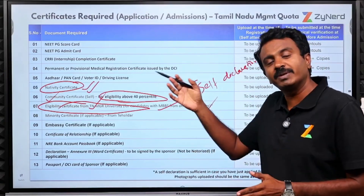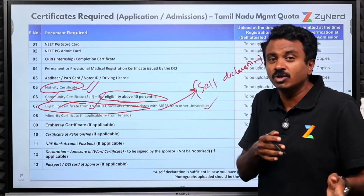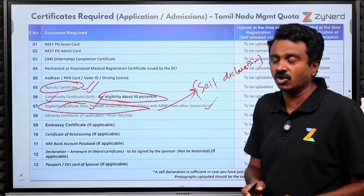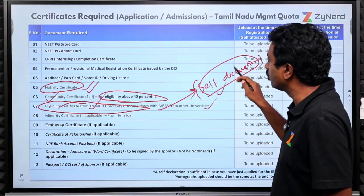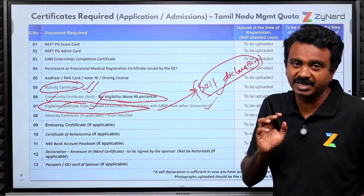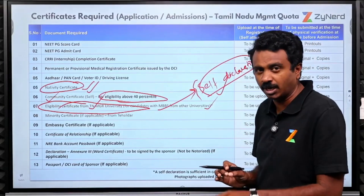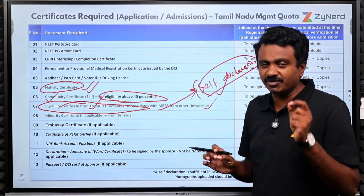Don't rush, because everyone is going for this eligibility certificate. If you receive allotment in another state and are not coming to Tamil Nadu, you might not need an eligibility certificate at all. Right now, a self-declaration can be submitted stating that you will produce an eligibility certificate at a later point in time and do not possess one currently.